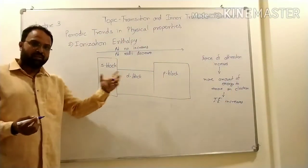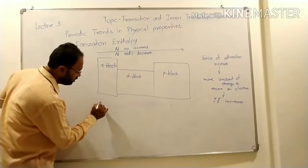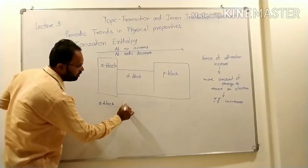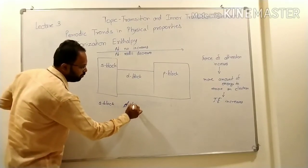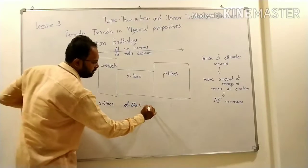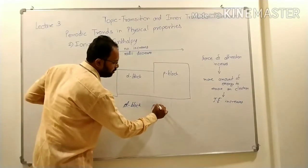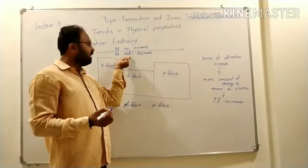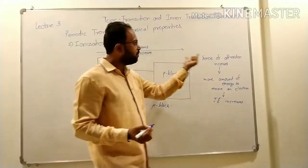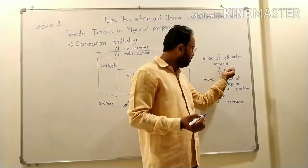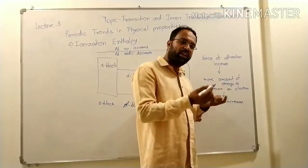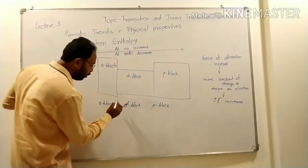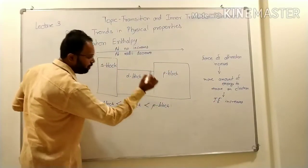The periodic trend goes: first S-block, then D-block, and lastly P-block. As atomic number increases, atomic radii decreases and force of attraction increases, so more energy is required to remove an electron. That is why ionization enthalpy increases from S-block to D-block to P-block. The ionization enthalpy values are in between those of S-block and P-block.